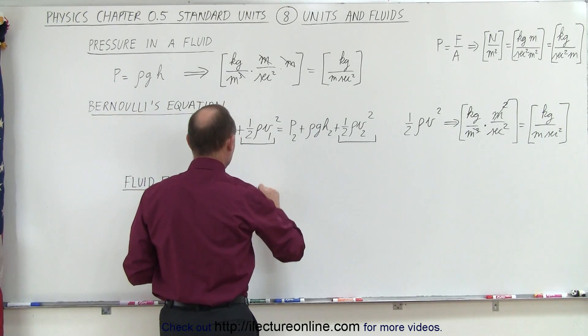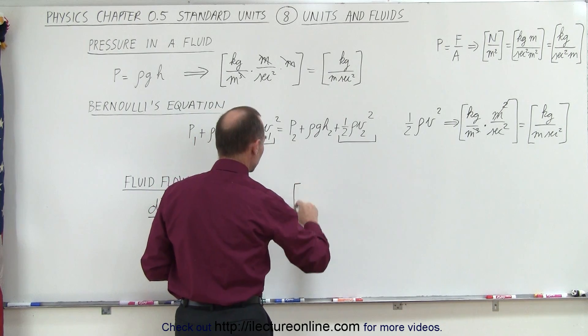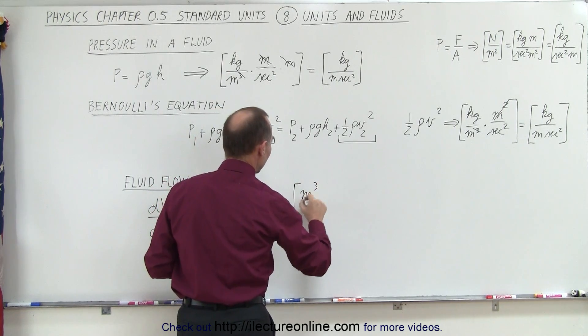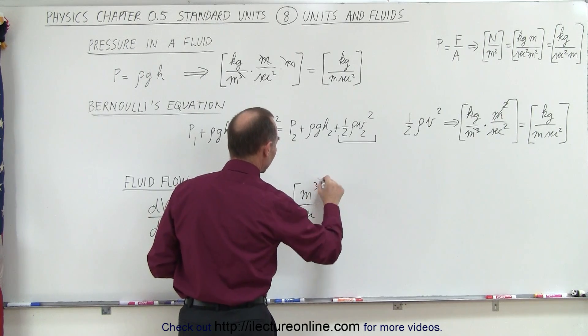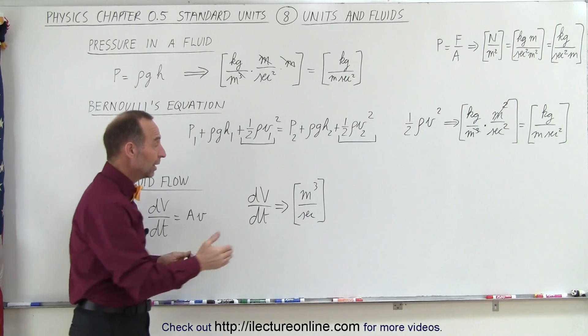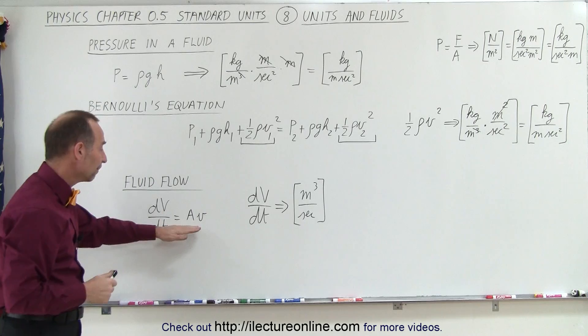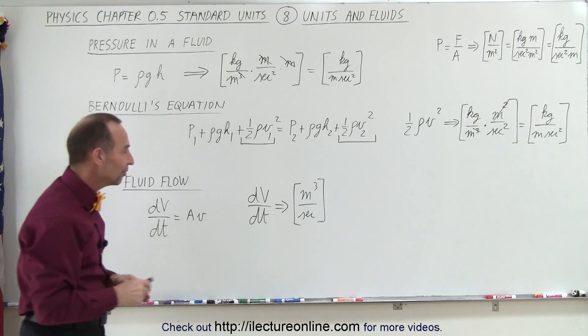So dV/dt, the amount of volume per unit time, will have units of volume in the numerator, which is meters cubed, and time in the denominator, which is seconds. So here you can see that the units for fluid flow is cubic meters per second, the amount of fluid that will flow by a given point.